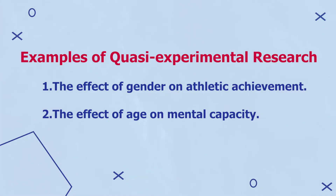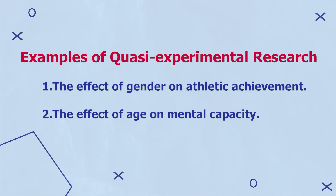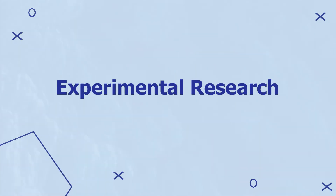Examples of quasi-experimental research include the effect of gender on athletic achievement and the effect of age on mental capacity.